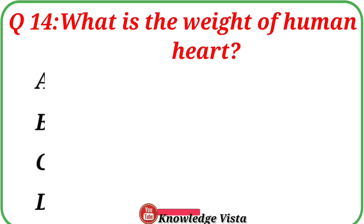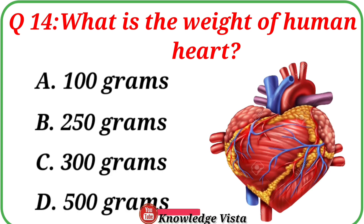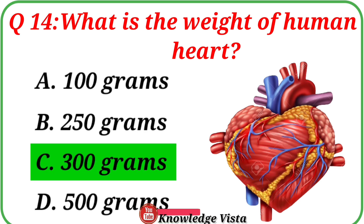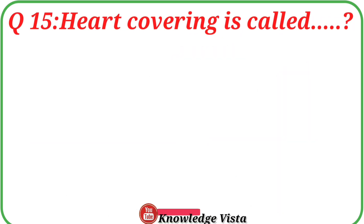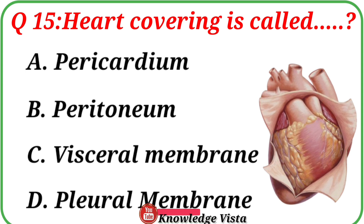Question No. 14. What is the weight of the human heart? Your options are: A. 100 grams, B. 250 grams, C. approximately 300 grams, D. 500 grams. Correct answer is option C: approximately 300 grams. Question No. 15. Heart covering is called. Your options are: A. Pericardium, B. Peritoneum, C. Visceral membrane, D. Pleural membrane. Correct answer is option A: Pericardium.